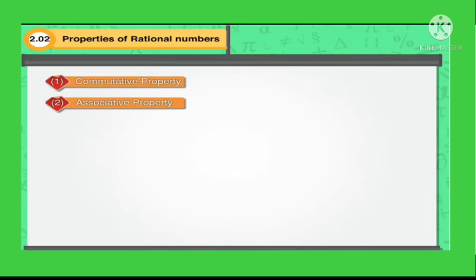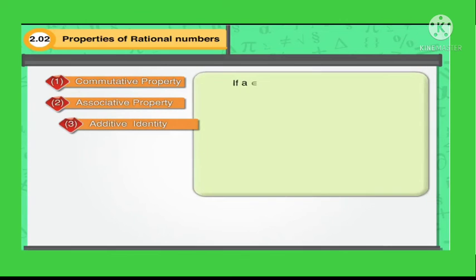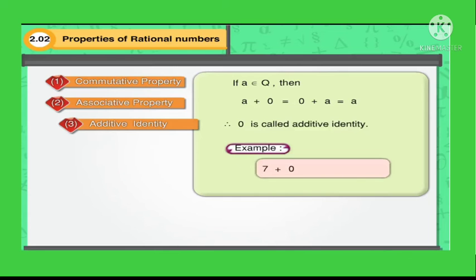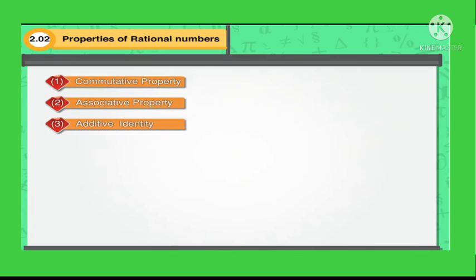Now we will take the third property: additive identity. If A is any rational number, then A plus 0 is equal to 0 plus A is equal to A. Therefore, 0 is called the additive identity. For example, 7 plus 0 is equal to 0 plus 7 is equal to 7.